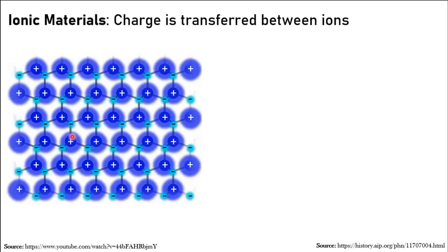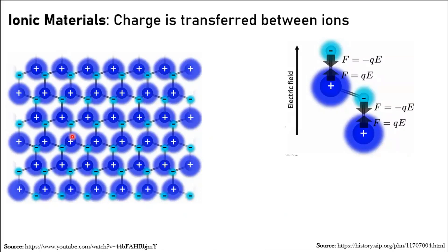Before discussing the Born effective charge, I would like to talk about some ionic material properties. In ionic materials, there are positive and negative charges which may be distributed in octahedral or tetrahedral arrangements. If we apply an electric field — either external or a local field for ferroelectric materials — this positive ion and negative ion will experience forces related to the electric field multiplied by the electronic charge.